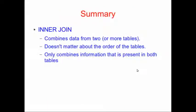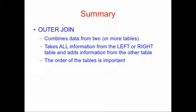So in this lesson, we've learned about inner joins, which combine data from two or more tables. It doesn't matter about the order of the tables, and it only combines information that's present in both tables. We also learned about outer joins, which take data from either the left table or the right table and add information from whichever other tables you specify. The main difference is that the inner join will only return data present in both tables, whereas the outer join will return all the data present in either the left or right table with whatever data it can find from the other table. So the order of the tables in an outer join is very important.